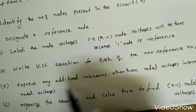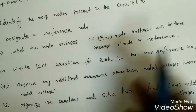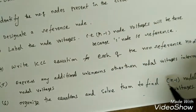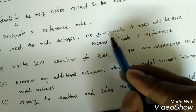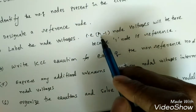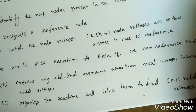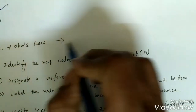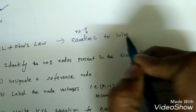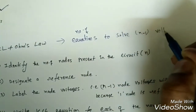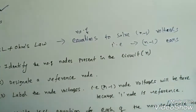If there is any dependent source, we have to express those dependent sources in terms of the known node voltages. The last step is to organize the equations and solve them to find the n minus 1 nodal voltages. In nodal analysis we have n minus 1 unknown values, so we require n minus 1 equations to solve the n minus 1 node voltages.